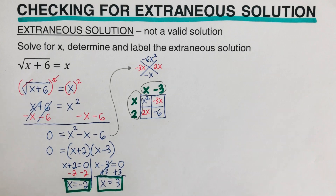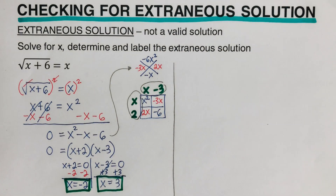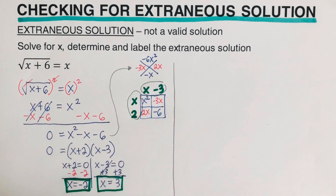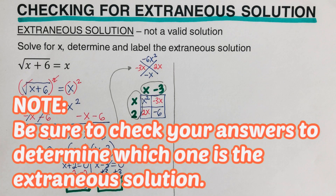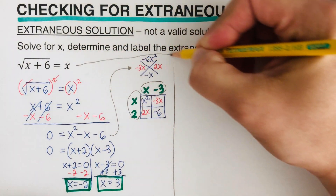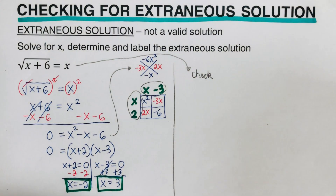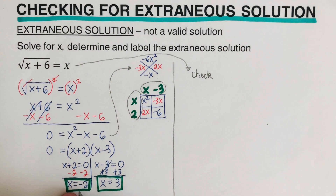Now our task is to determine which of these two solutions — negative two or three — is the extraneous one. We move on to the second step: check your answer and determine which is the extraneous solution. It is very important that we check our answers, because sometimes algebraically it appears to work but one of the values may be extraneous. We will use the original equation to check our work.